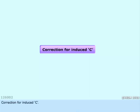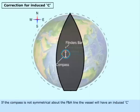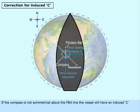Correction for Induced Sea. If the compass is not symmetrical about the FNA line, the vessel will have an Induced Sea. For example, say the compass is situated to port in relation to the ship's centerline.